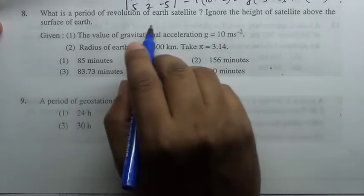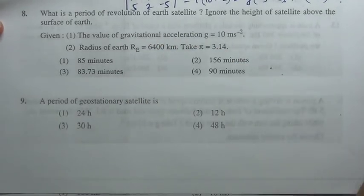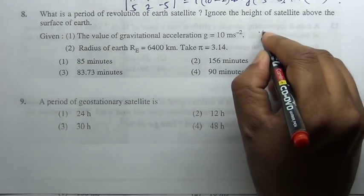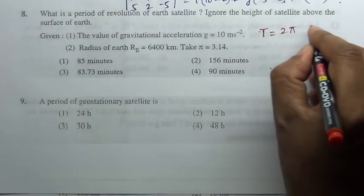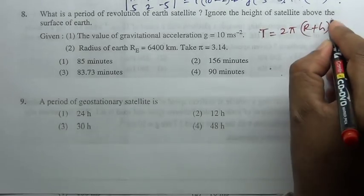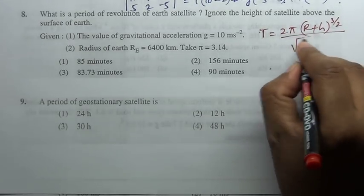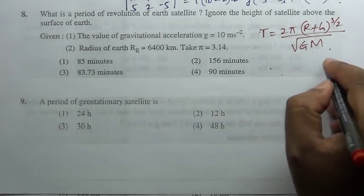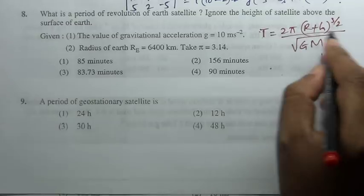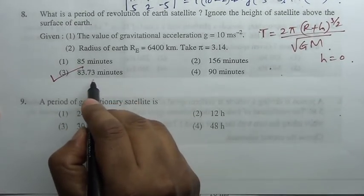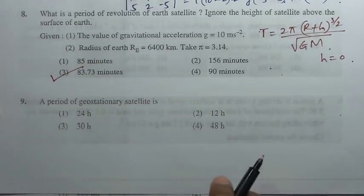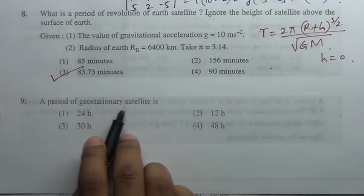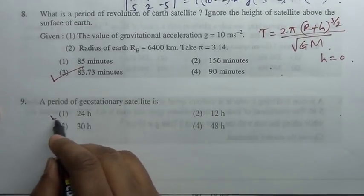What is the time period of revolution of earth satellite? Ignore height of the satellite above the surface of earth. Time period is given by 2 pi r plus h whole power 3 by 2 divided by square root of GM. If height is neglected, means h is 0. It's a trivial question, it's about 83.7 minutes. A period of geostationary satellite is 24 hours.